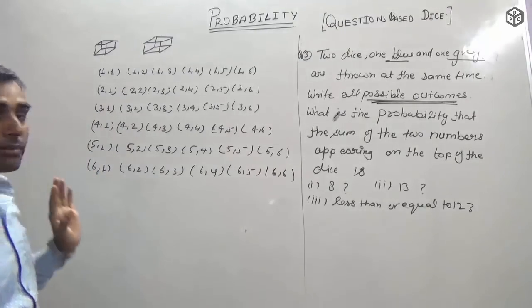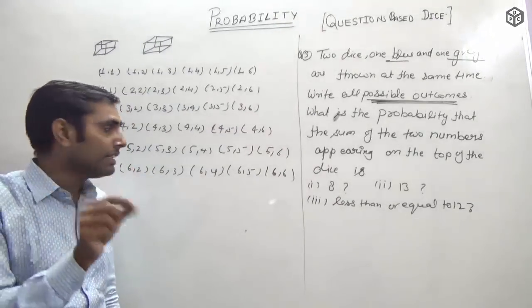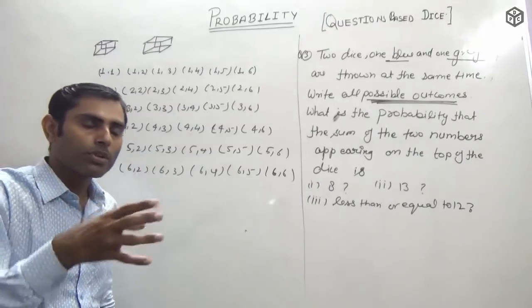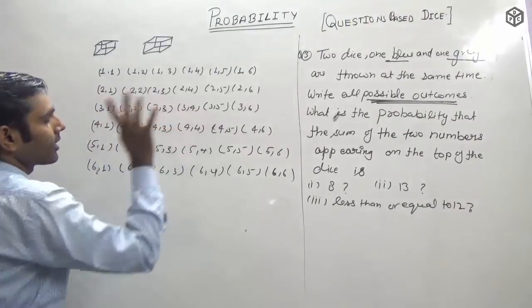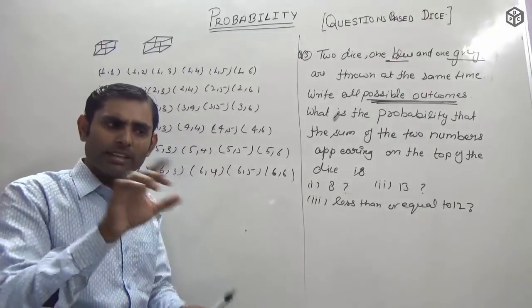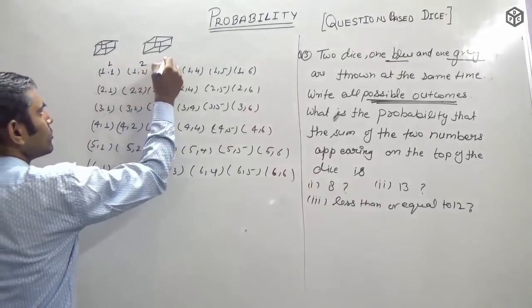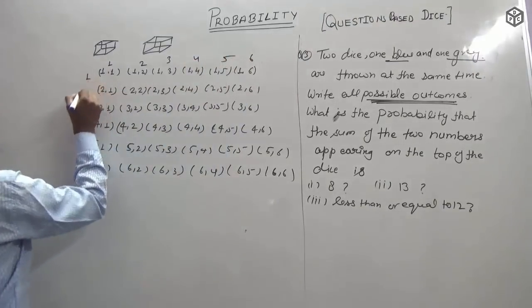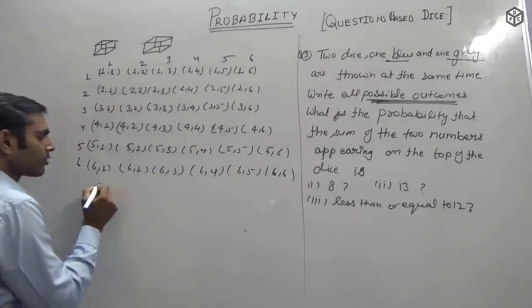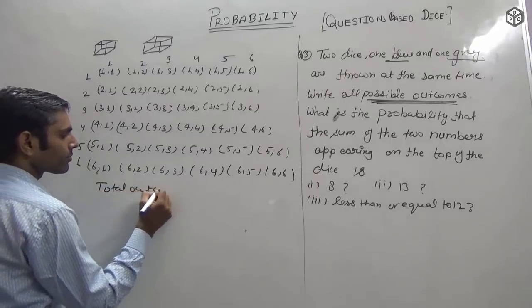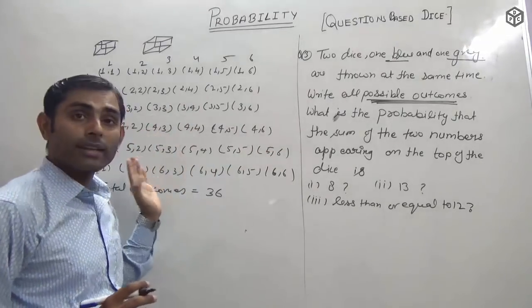Total outcomes = 6 × 6 = 36. Friends, you must write all these outcomes — if you don't, marks will be cut. Now find P(sum = 8).